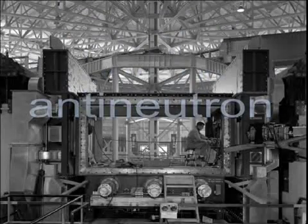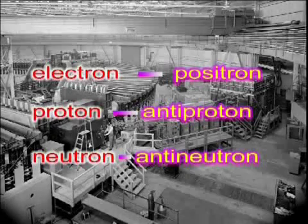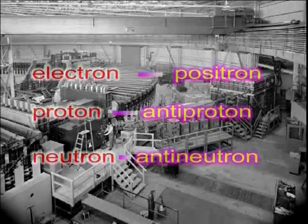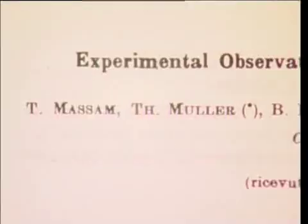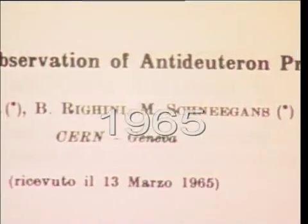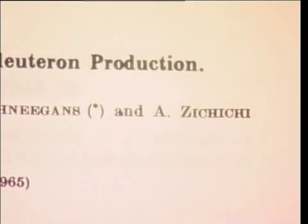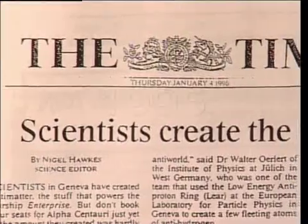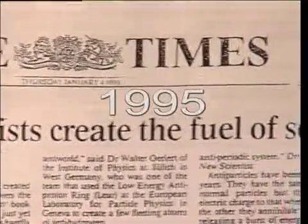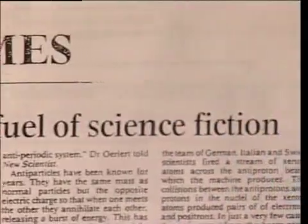All three particles that make up atoms — electrons, protons, and neutrons — were now known to each have an antiparticle. The observation of a nucleus of antimatter in 1965 confirmed the symmetry between matter and antimatter, which was further proved in 1995 when the first full atoms of antimatter were finally synthesized in the Lear Accelerator at CERN.